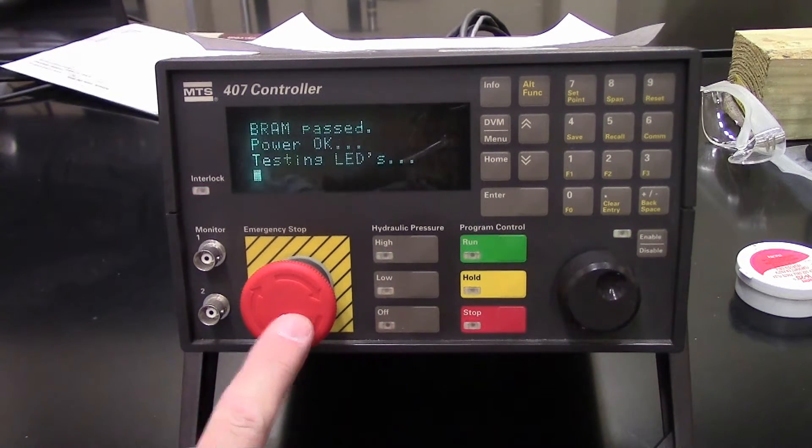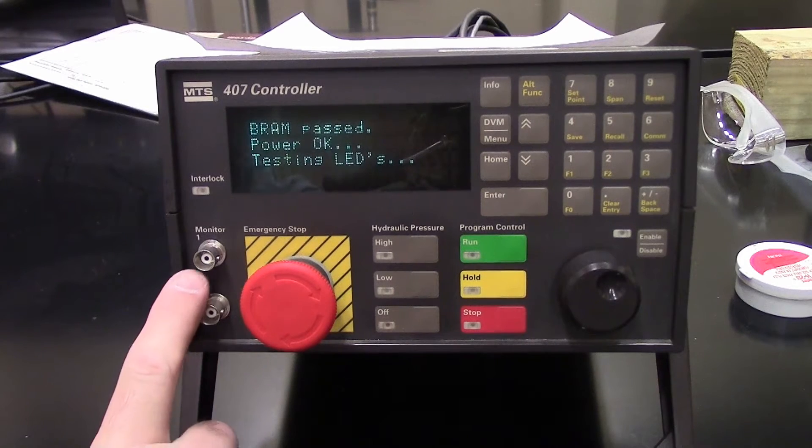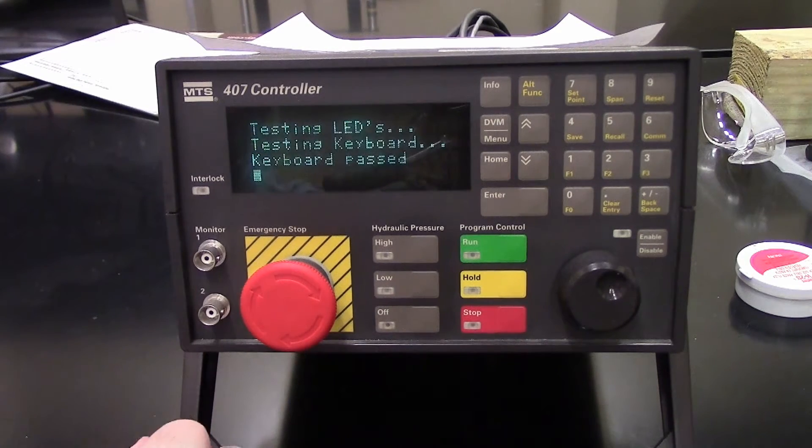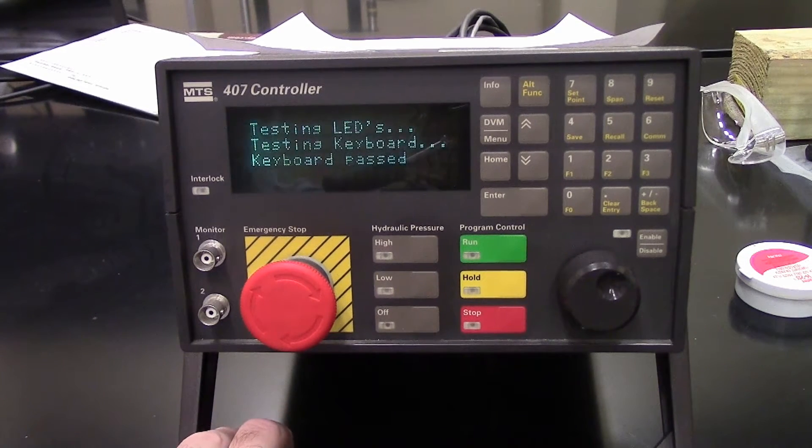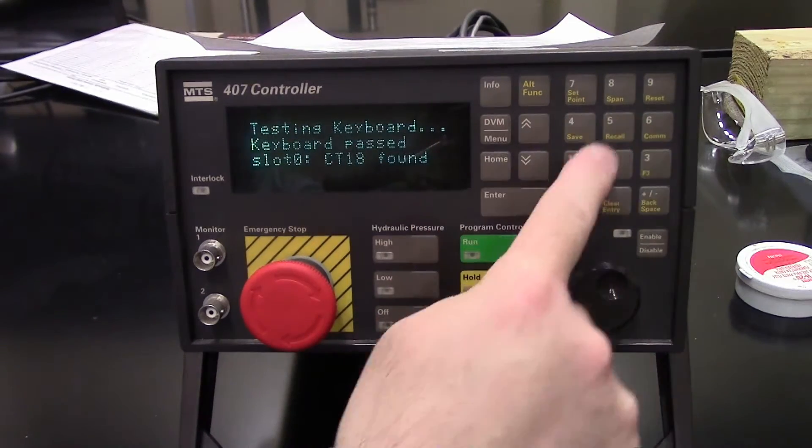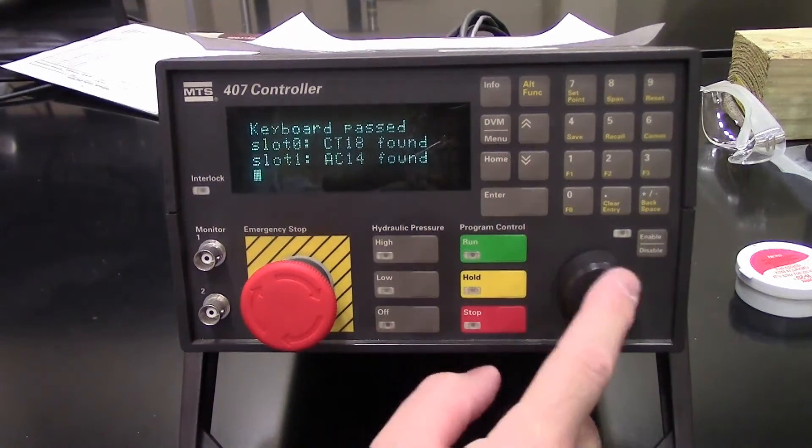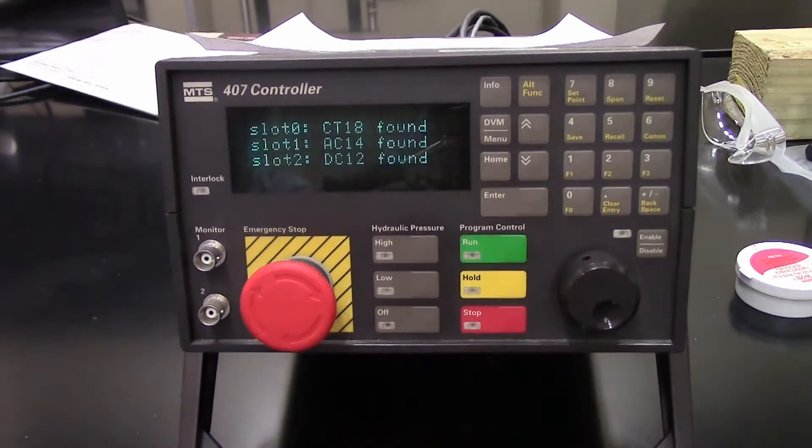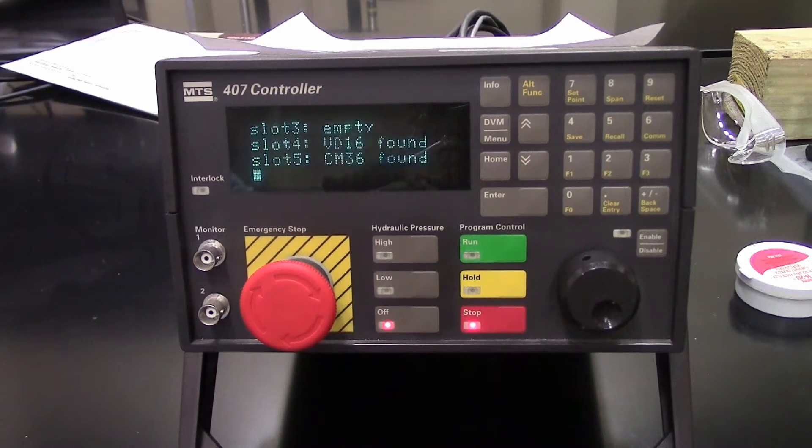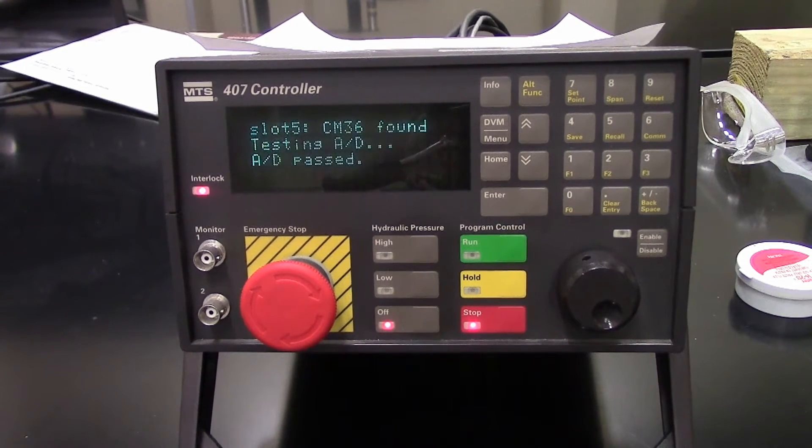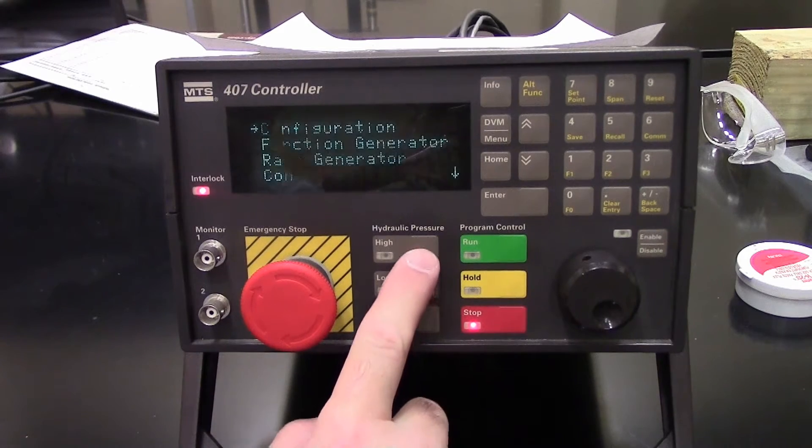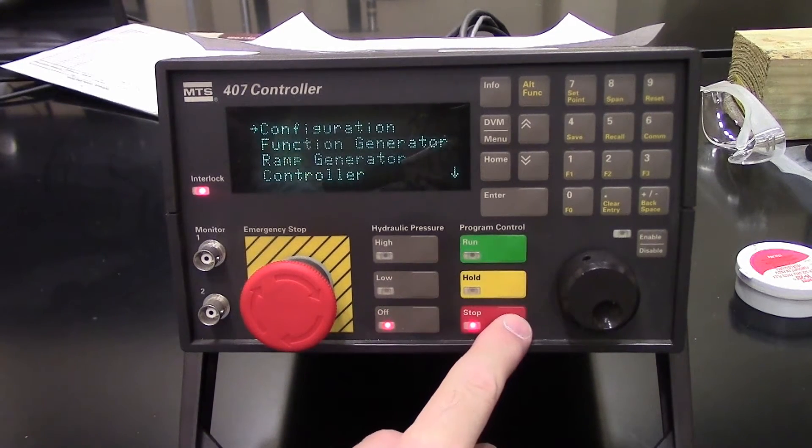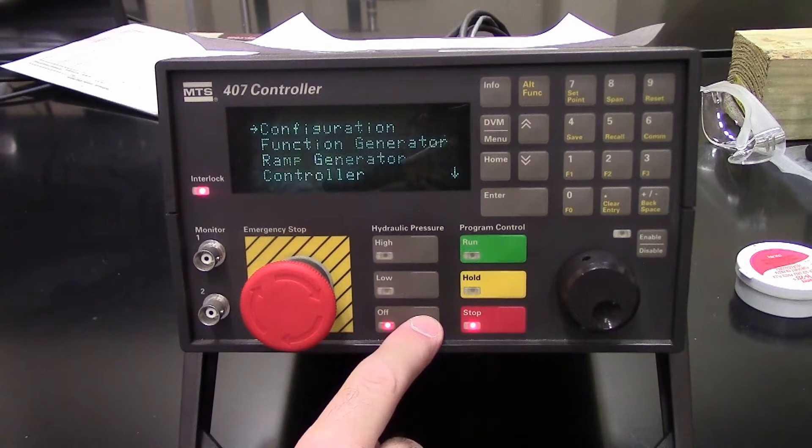Here's the emergency stop, here are the monitor ports for the conditioner - these are programmable. Here's the keyboard and keypad, and the knob that has to be enabled. So it's going through its boot up process, looking for the different slots. Hydraulic pressure low and high, program run, hold, stop, and hydraulics off.